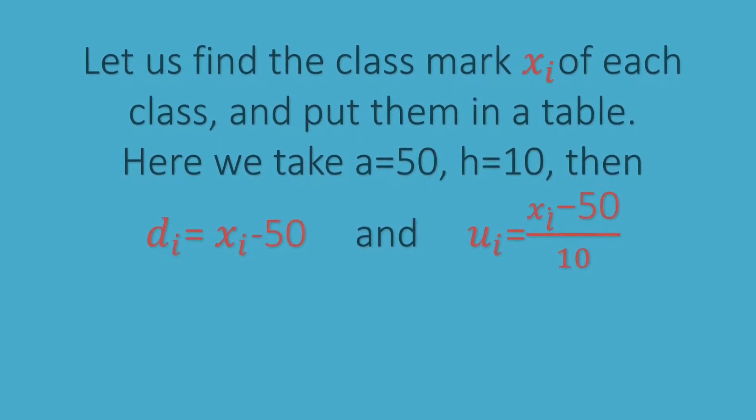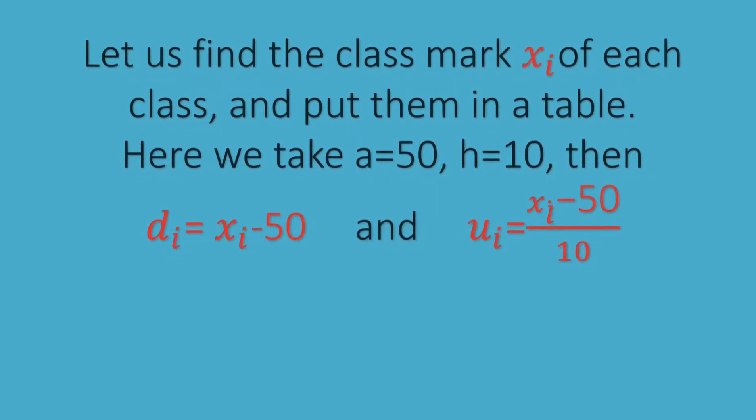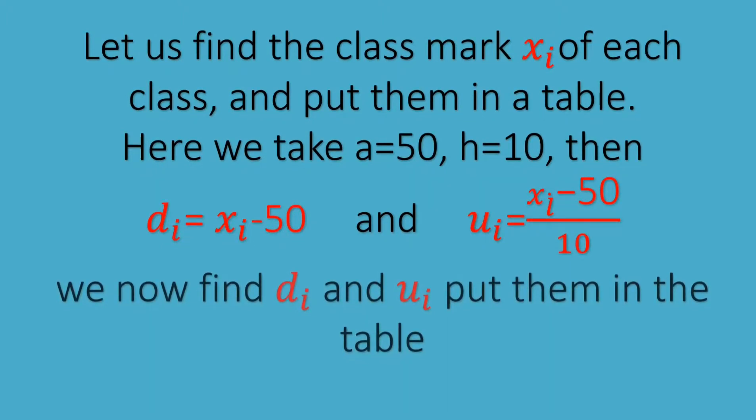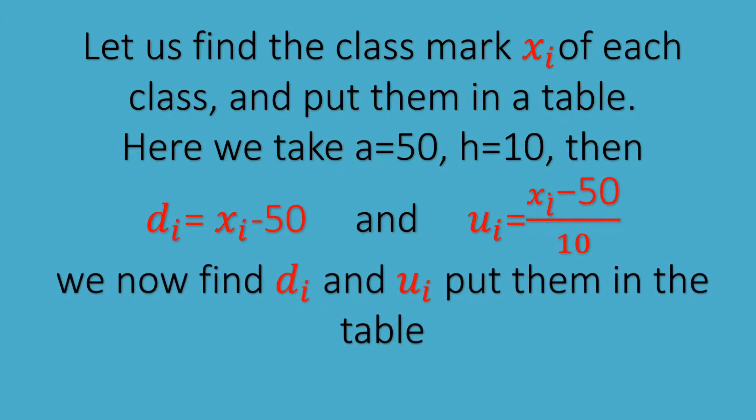Here we take a equal to 50, h equal to 10, then d_i is equal to x_i minus 50, and u_i equal to x_i minus 50 by 10. We now find d_i and u_i, and put them in the table.